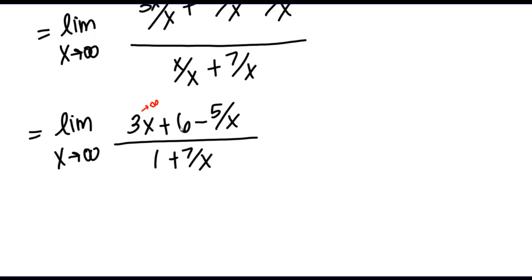What about 6? As x goes to infinity, 6 just stays 6. What about 5 over x? Here x is in the denominator, so as x gets larger and larger — you can think about plugging in really big values like a million or a billion — this term 5 over x is going to get smaller and smaller, closer to 0. We can do the same on the denominator, term by term. I have a constant term 1, so as x goes to infinity, 1 just stays 1. And then 7 over x, as x goes to infinity, that is also going to go to 0.